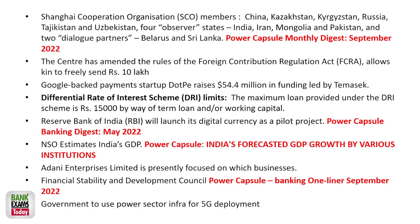The SCO members — who are members — was a popular topic in the news and appeared in the exam. FCRA allows kin to free lease up to 10 lakh rupees. This year, TCS (Tax Collection at Source) is very popular — credit card payments above 7 lakhs will attract TCS, so it is in the news and will likely come in the paper.